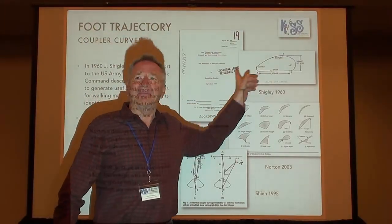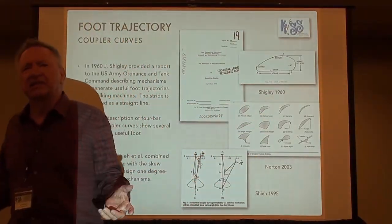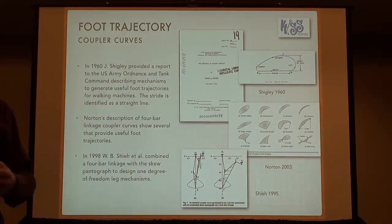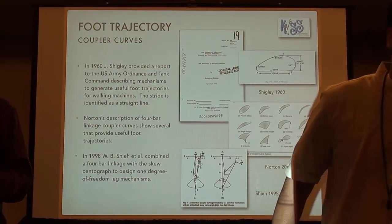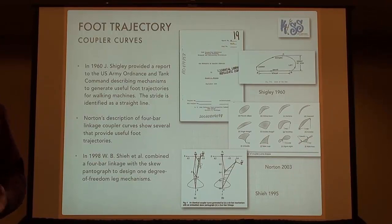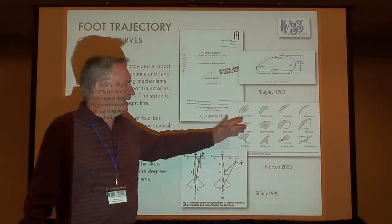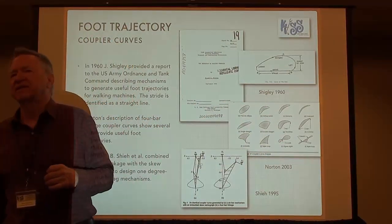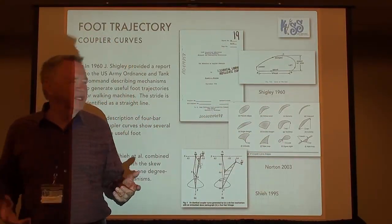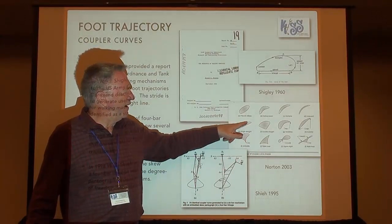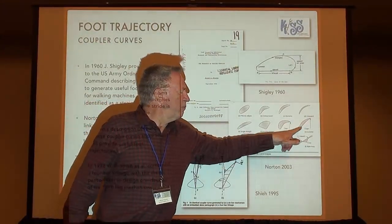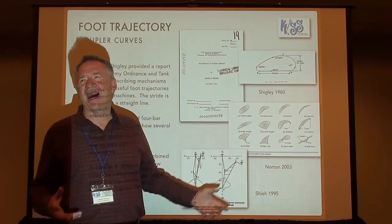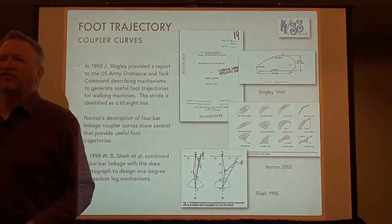This is a straight line mechanism — and straight line mechanisms are cool in mechanical design. So this is an opportunity to explain coupler curves and talk about straight line mechanisms. This is from Norden — a visual classification of coupler curves. The ones we want are the ones that have straighter portions to them. The question is: how do I find those coupler curves in a four-bar linkage?